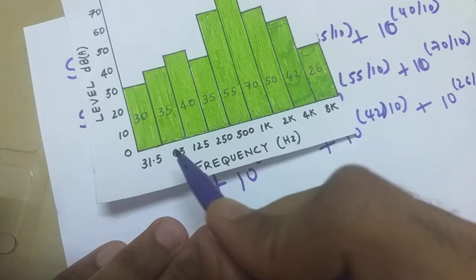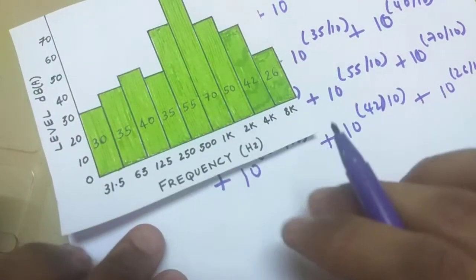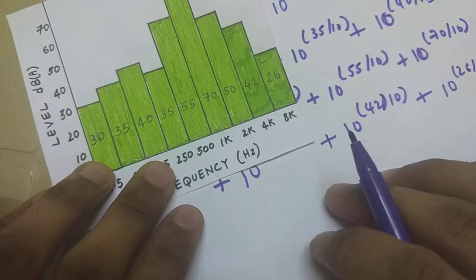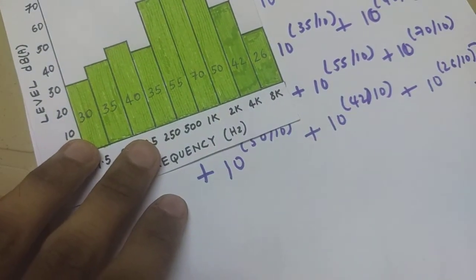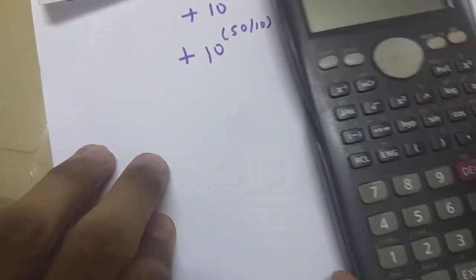So these are values I assigned randomly for this example. So now we have written this down, now we got to calculate the overall level. So I'm going to use a scientific calculator to do the computation. So here we go.